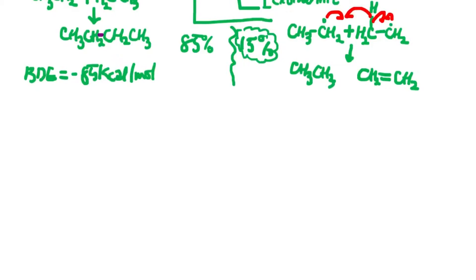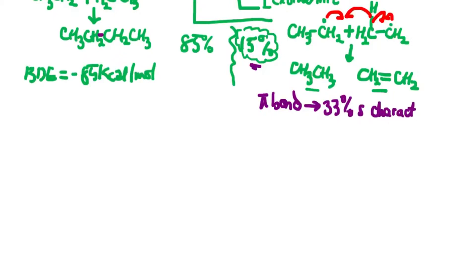Looking at the 15 percent side: the disproportionation pathway shows that the driving force is the formation of a pi bond. This pi bond is more stable because the carbon radical has approximately 33 percent s-character. The more s-character a particular carbon radical has, the more the reaction is driven toward formation of a product with better s-character, since the s orbital has a stabilizing effect.